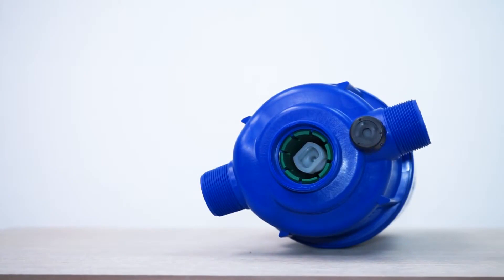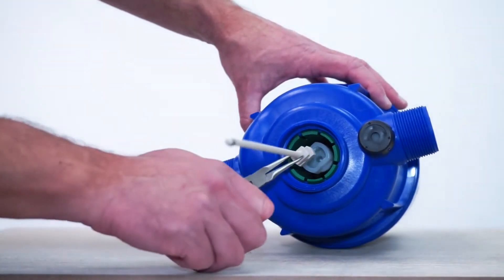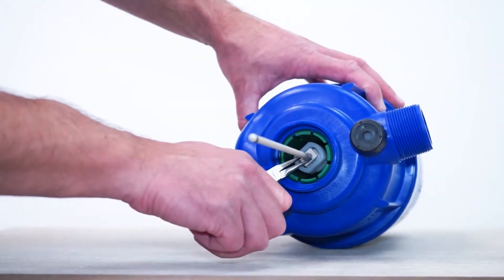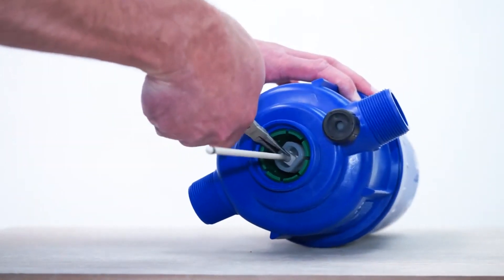To install the new plunger assembly, use the needle nose pliers to align the top of the plunger with the retainer. Then twist it a quarter turn clockwise to lock.